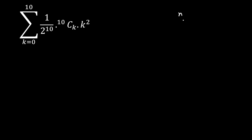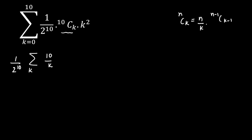First, I am going to use the formula: nCk = (n/k) × (n−1)C(k−1). Since (1/2^10) is a constant, it comes outside. Applying the formula to 10Ck, we get (10/k) × 9C(k−1), multiplied by k squared. Note that k cannot be 0 here (that would be negative), so k varies from 1 to 10.